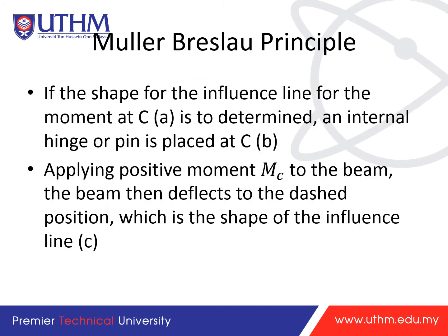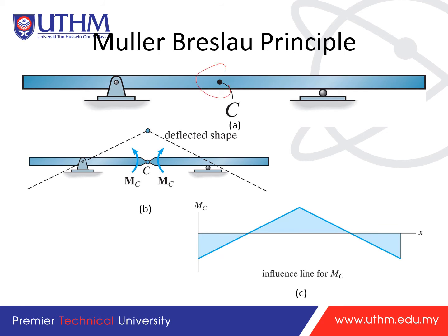For the moment influence line at C: insert an internal hinge or pin at C, then apply positive moment MC — counterclockwise on one side, clockwise on the other. The hinge allows the two sections to rotate, deflecting in opposite directions. The resulting deflected shape is the influence line for MC. For an overhanging beam with a pin at A replaced by a roller, the deflected shape yields a negative AY on one side and positive on the other.